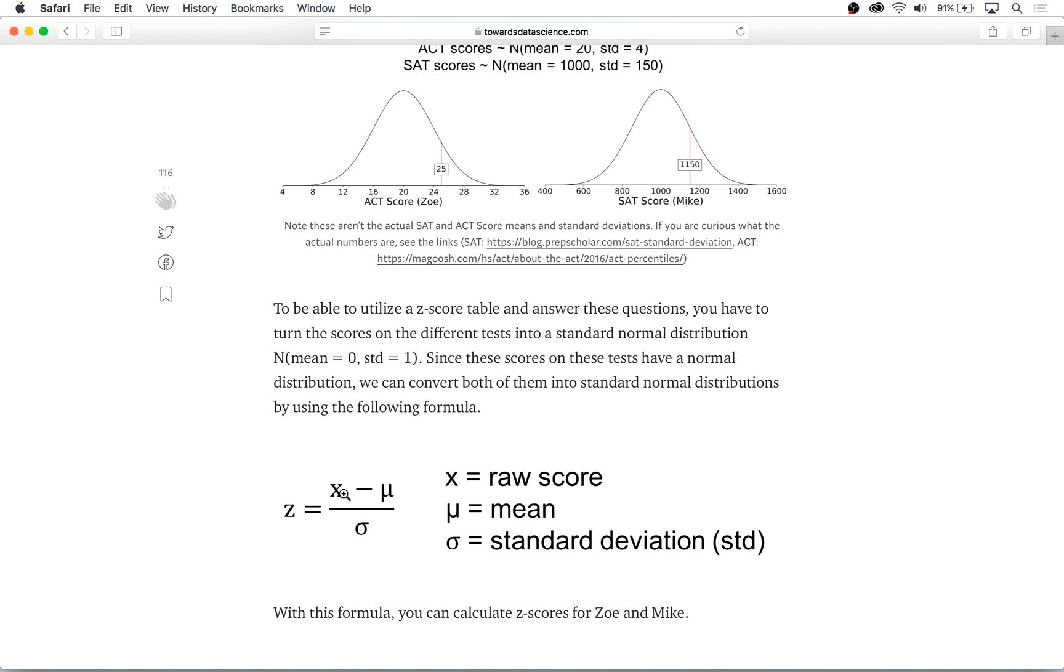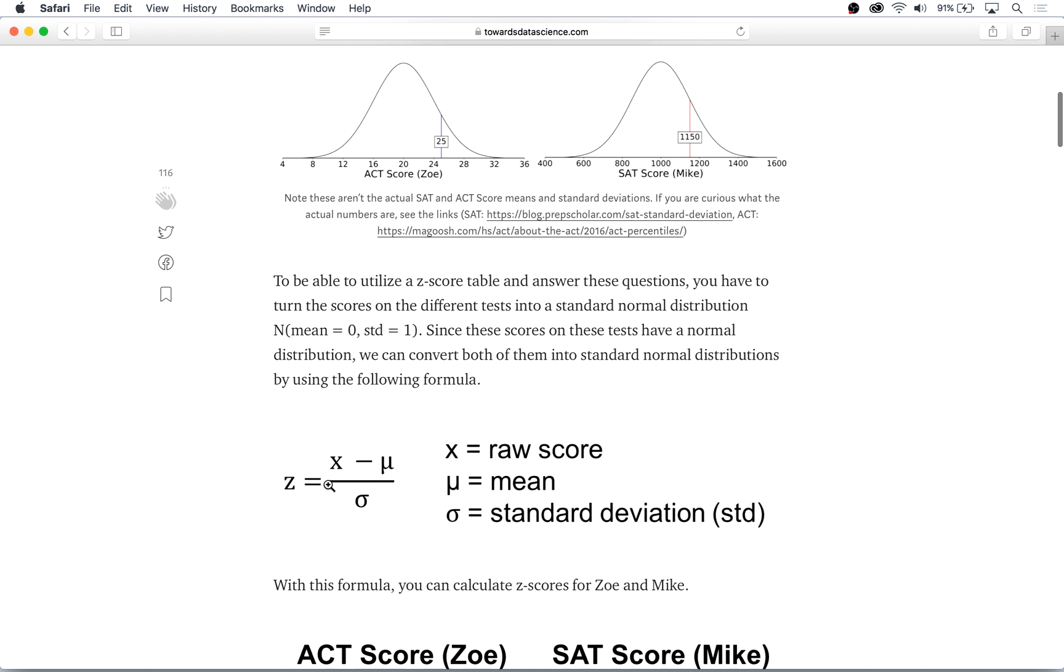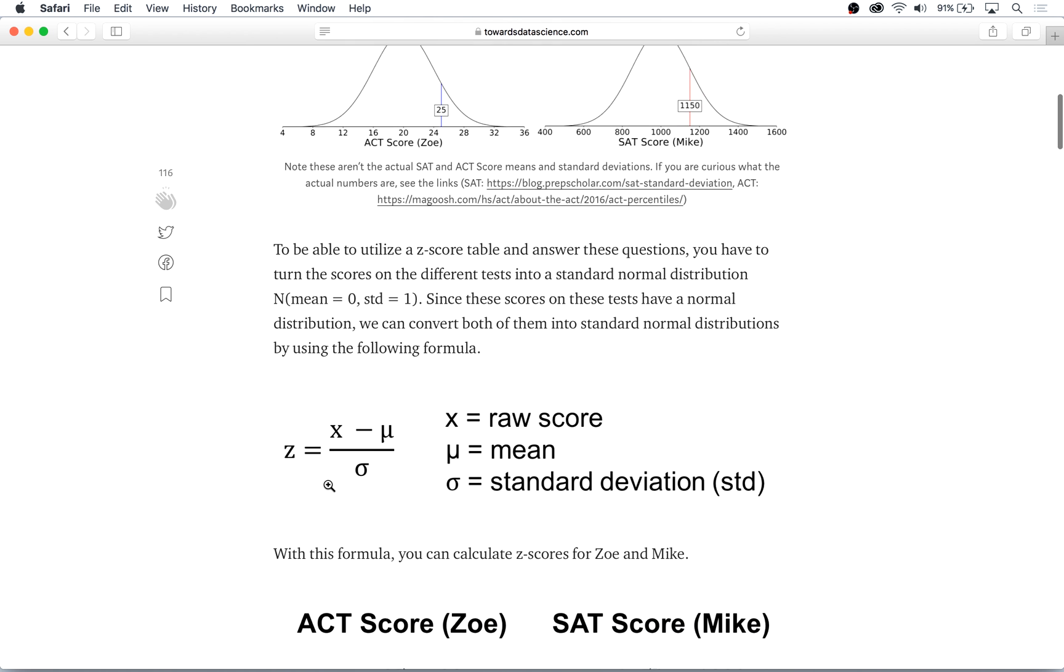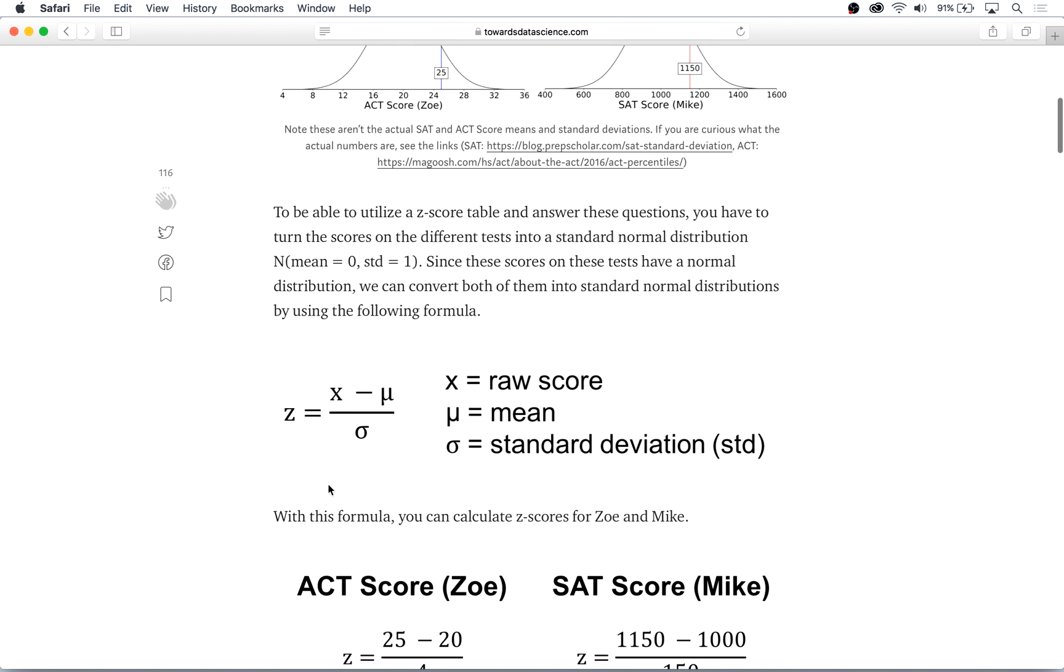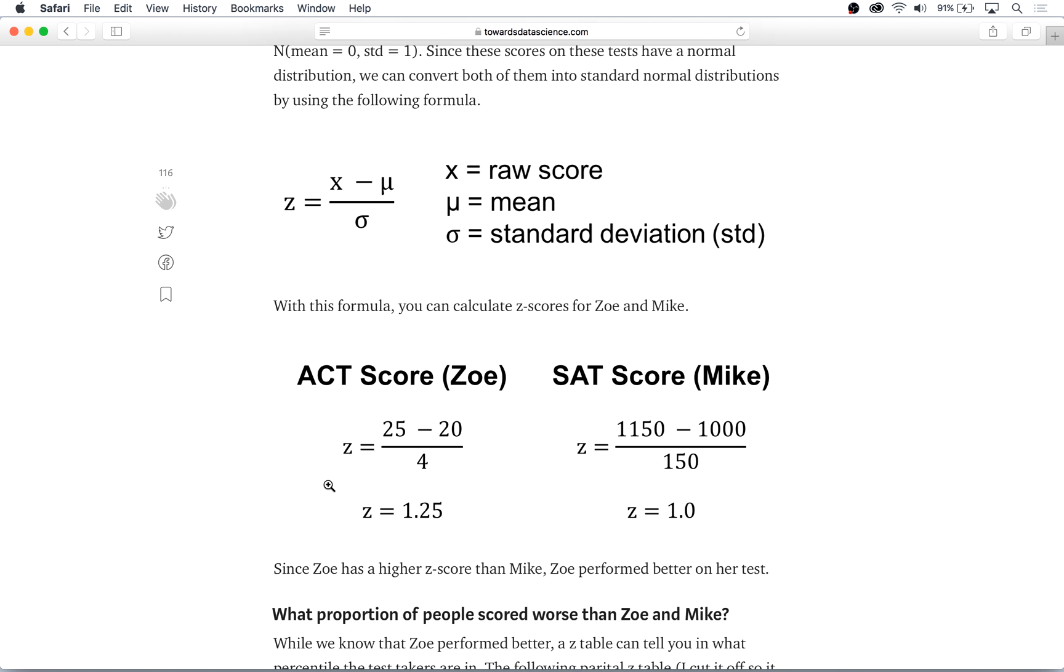x in this case are the scores that Zoe and Mike had. So with this formula we can now calculate Zoe's and Mike's z-scores. So for Zoe she had a score of 25 minus the mean for that year which was 20 and this is all divided by the standard deviation of 4. This means that Zoe has a z-score of 1.25.